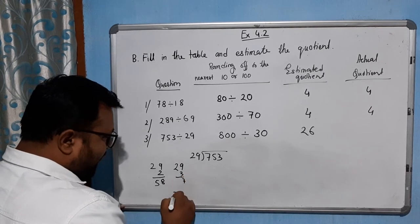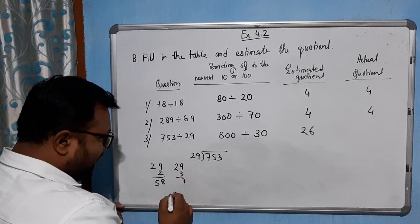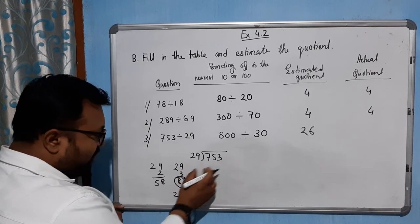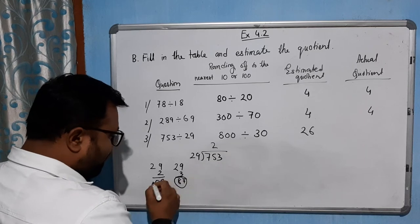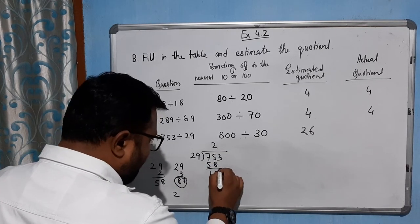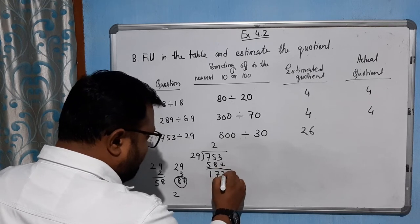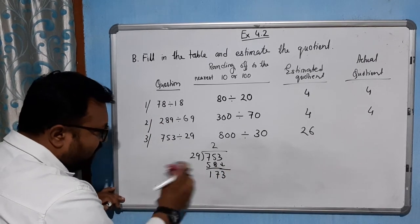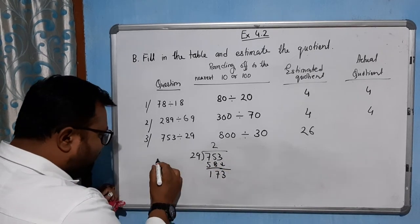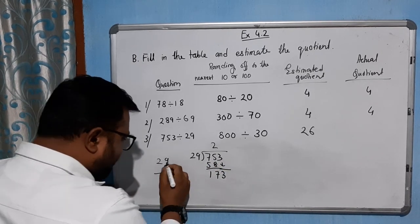29 times 3 is 87, which exceeds the value. So we will take 2. Remainder is 13, and 3 comes down here. Now 29 into 133, let's try by 6. How much will you get? Tell me.